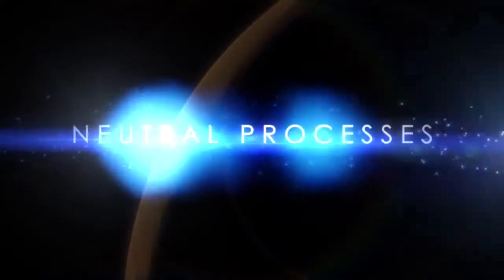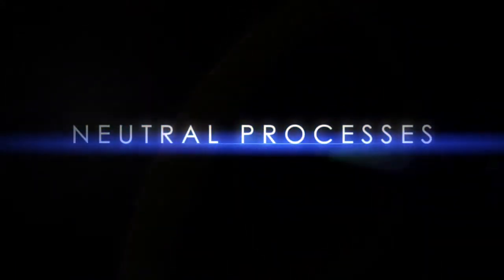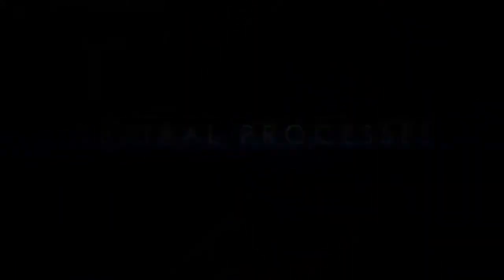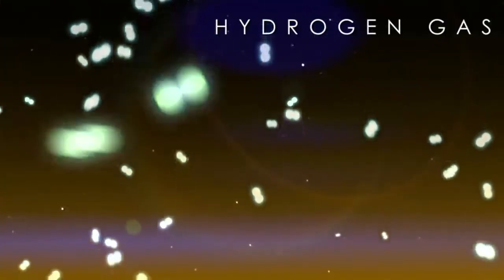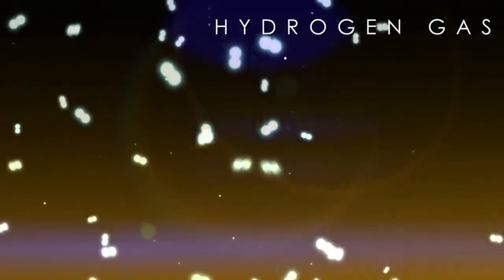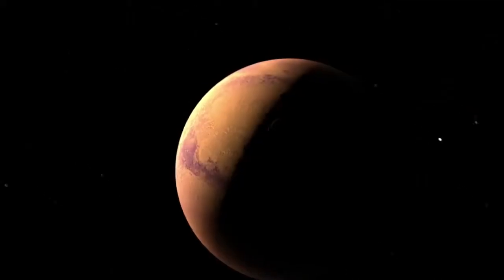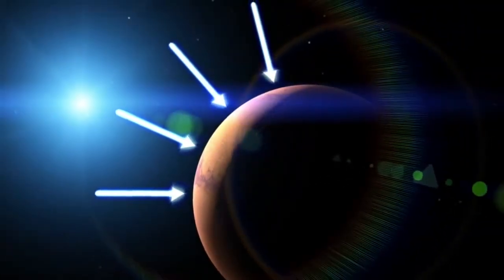One way that an atmosphere can be lost to space is through a series of what are called neutral processes, which are processes that involve neutral particles rather than charged particles. On Mars, for example, atoms and molecules of hydrogen gas can be found in the upper atmosphere, and they often collide with each other. For the most part, the molecules are still bound to the planet by gravity.